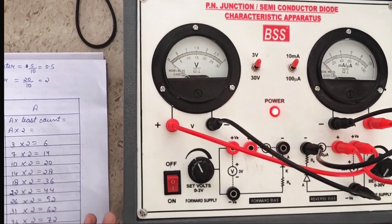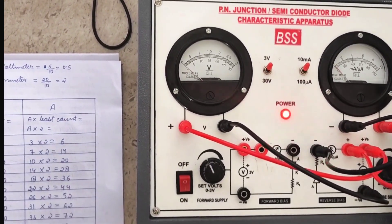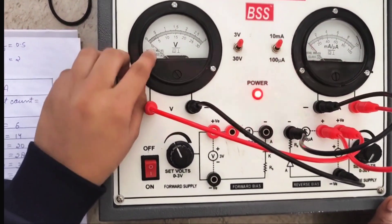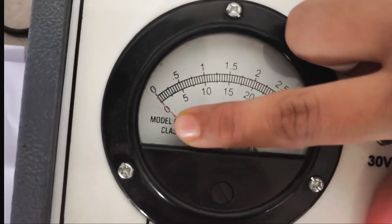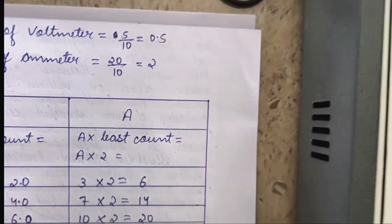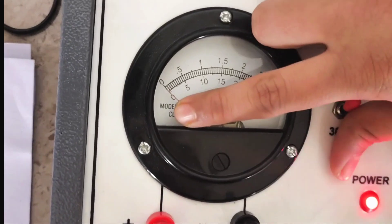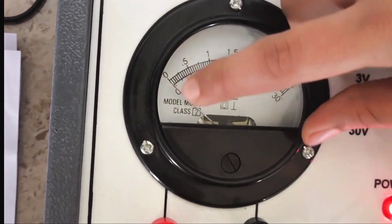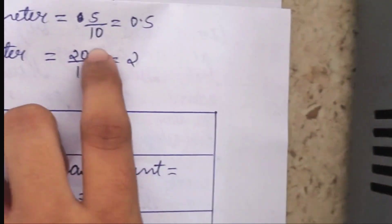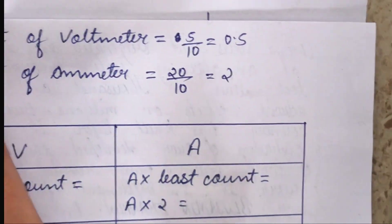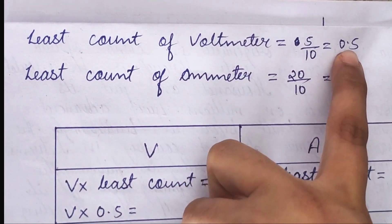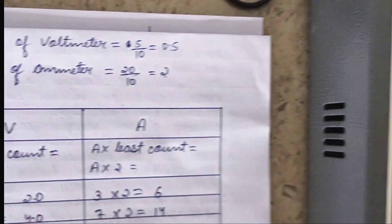First we have to calculate the least count of the voltmeter as well as of the ammeter. For calculating the least count, we first have to see that after 0, the value 5 is written. So 5 will be written in the numerator, and for the denominator we have to count the number of lines between 0 and 5, which is 10. So the least count of the voltage will be 0.5.